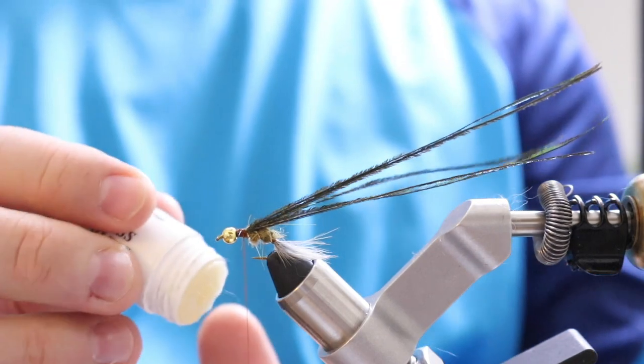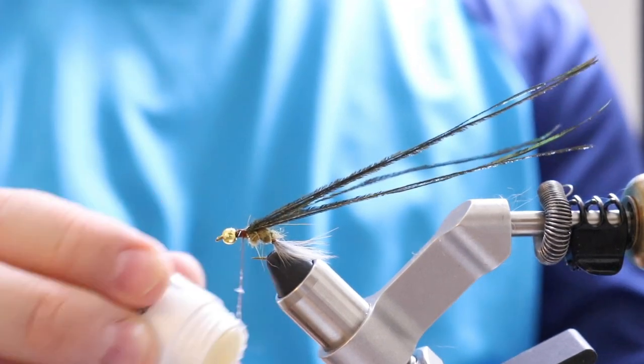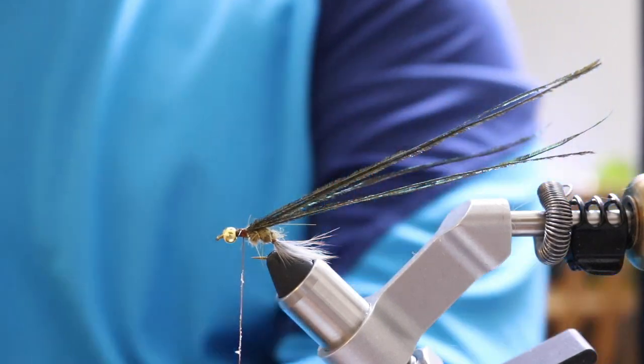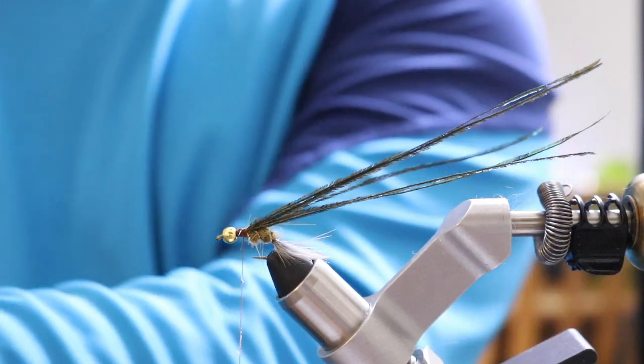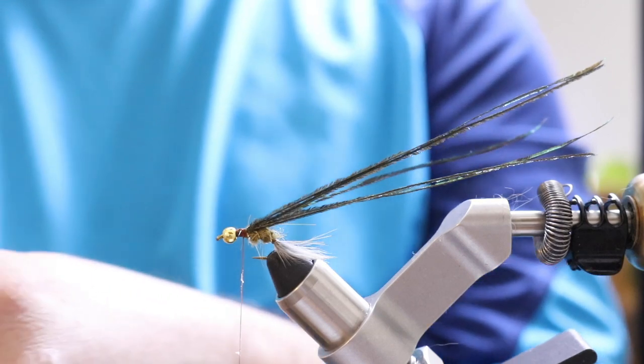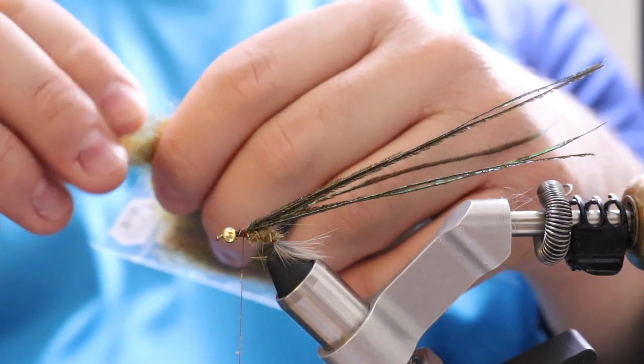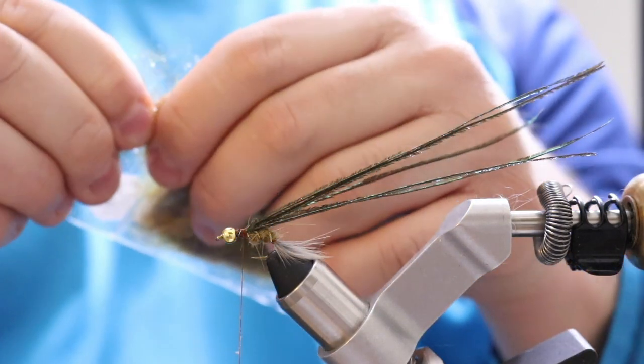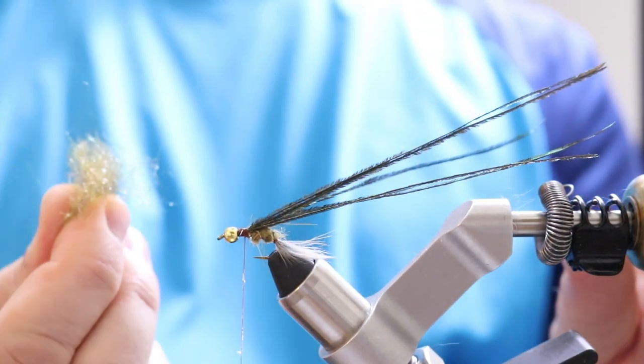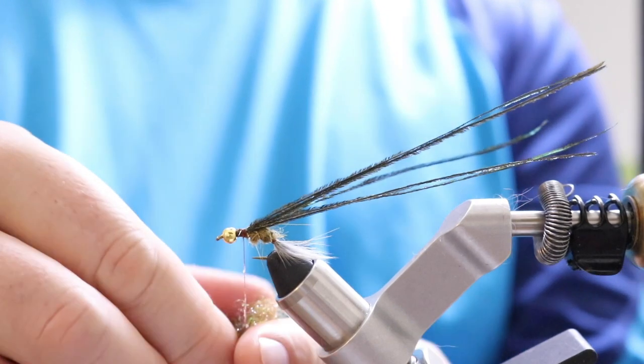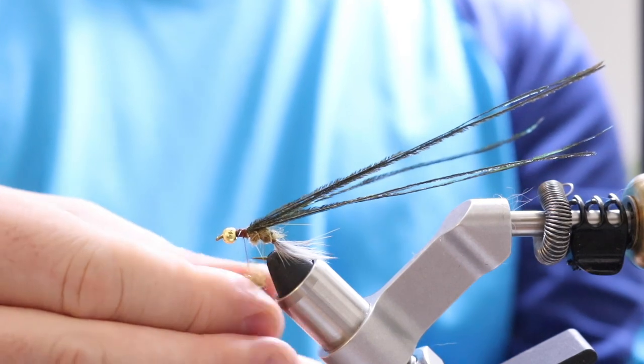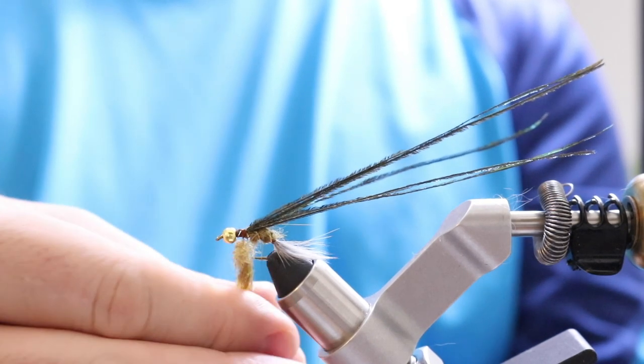And then you got your wing case. Make it a little bigger. Cause this is the part we're gonna put more dubbing on. And it's gonna be, you want it to be fatter. Like robust. And I'll take, again, some wax. Put it on there. And take our UV ice dub in brown olive. A little bit more than last time. Probably like pinching a bit. Like this much. Right. And then we're gonna rub it on our thread. Twist it on there.